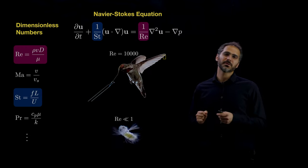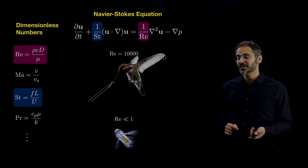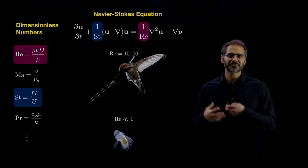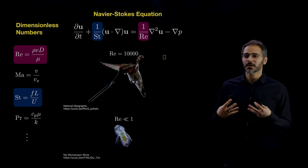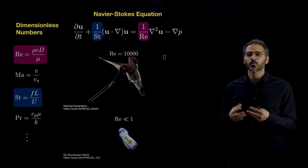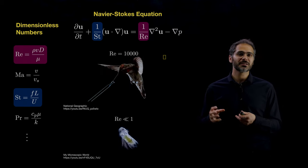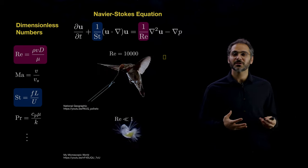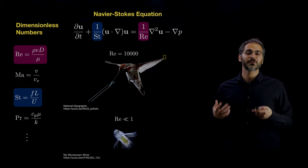This is just one example of the many dimensionless numbers found in physics in general and in fluid dynamics in particular. Dimensionless numbers have played a very important role in the development of physics, and you can appreciate that as you go deeper into complex systems where we don't really understand the dynamics — we don't have clear equations, but we know that there are some numbers that will quantify bifurcations and changes in the qualitative nature and behavior of the system.